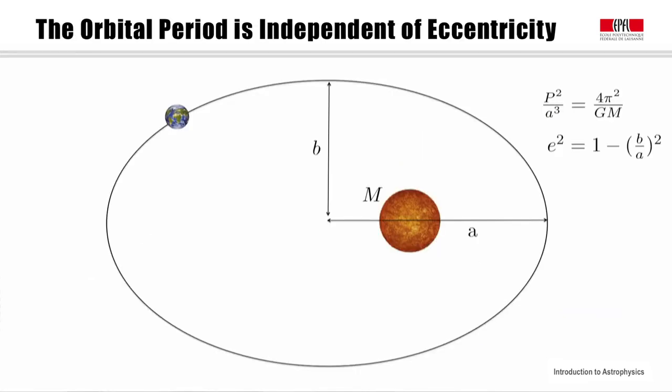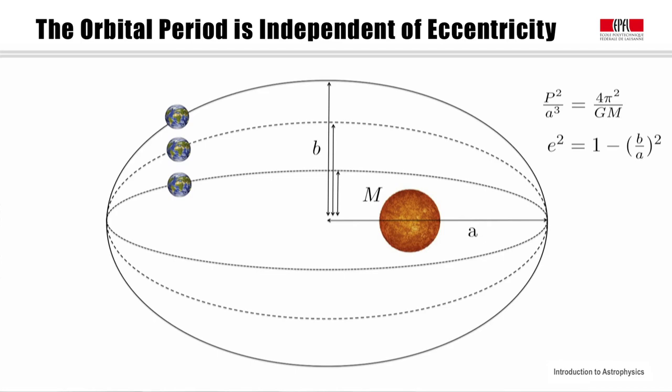We note that this law does not depend on the eccentricity of the orbit, defined as e squared equals 1 minus (b/a) squared, where b and a are the semi-minor, respectively the semi-major axis of the orbit. This means that orbits with different eccentricities have the same orbital period as long as the semi-major axis of the orbit and the mass of the main body are set.